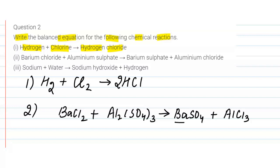For sulfate, we have three groups, so we write 3 BaSO₄. Barium also becomes three atoms on the right-hand side, so we write 3 BaCl₂. For aluminum/chlorine, we have two atoms on the left and three on the right, so two times three gives six — we write 2 AlCl₃. This is our balanced chemical equation.